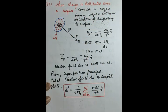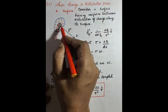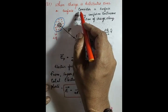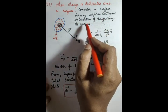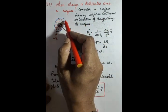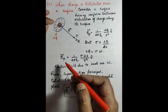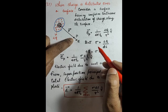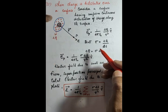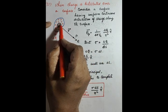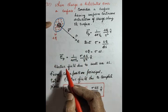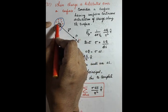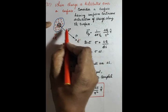When the charge is distributed over a surface, we consider a surface with uniform distribution of charge along its surface. The total plate has positive charge distributed over it, and we want to find the electric field at point P. First, we consider a small area element delta S, and calculate the electric field due to this small area at point P.